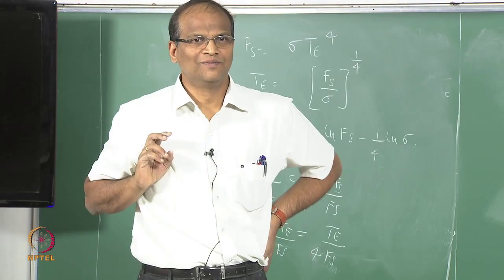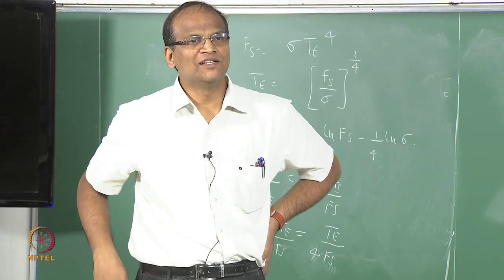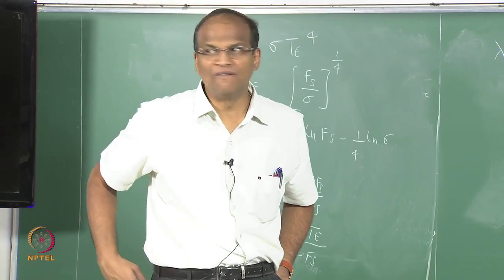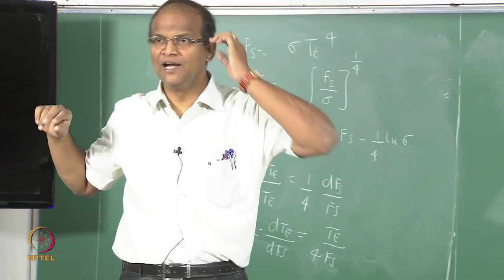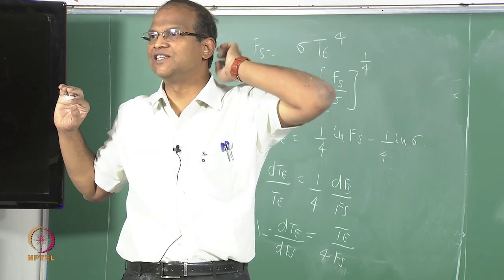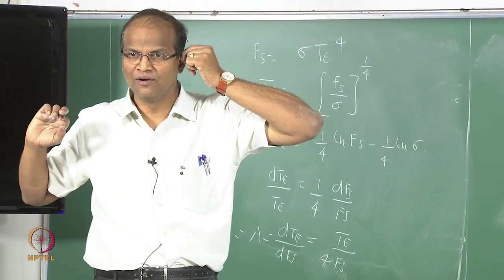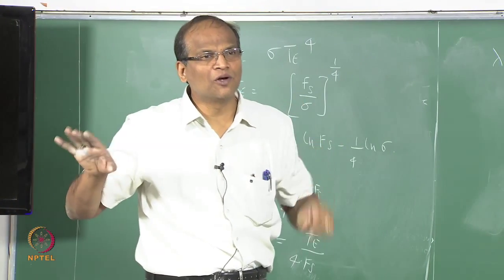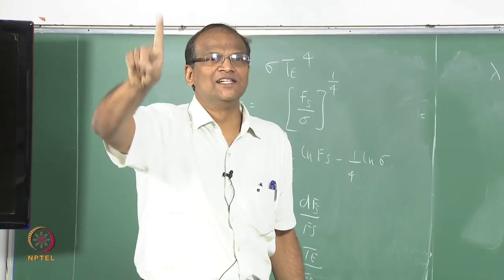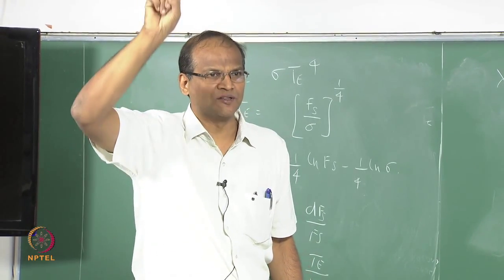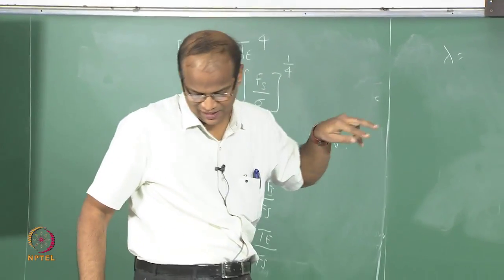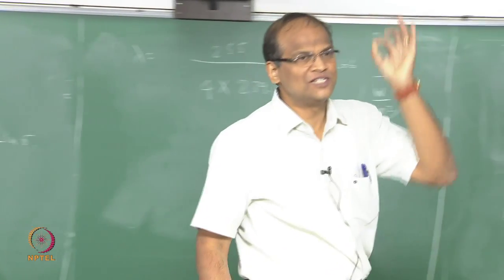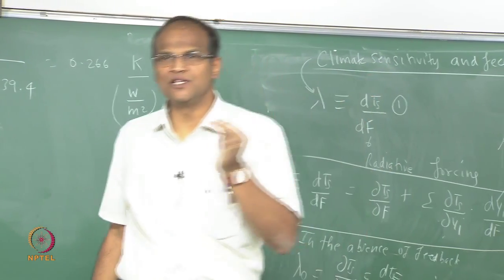In simple English: if the solar forcing changes from 239.4 to 240.4 watts per meter square, the earth's temperature will change by 0.266 Kelvin. What is interesting is the reciprocal: to have a 1 Kelvin change in the equivalent black body temperature, 1/0.266 = 3.76 watts per meter square of forcing is required.